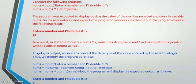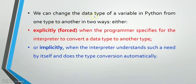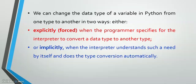So type 1 and type 2 have different names. We can change the data type of a variable in Python from one type to another in two ways. The first is explicitly, which means forced — when the programmer specifies for the interpreter to convert a data type to another type. This means when typing a Python program, the programmer adds the format specifying that the string has to be converted to integer; only then will the data type change.